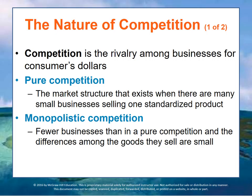Monopolistic competition is the market structure that exists when there are fewer businesses than in pure competition, and the differences among the goods they sell are small — like aspirin, soft drinks, vacuum cleaners. These are examples of goods sold in this monopolistic competitive environment. There are differences in packaging and maybe warranty, but generally they all satisfy the same consumer needs.